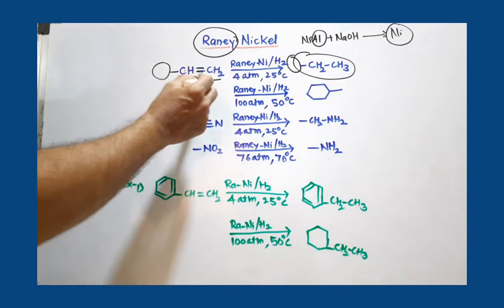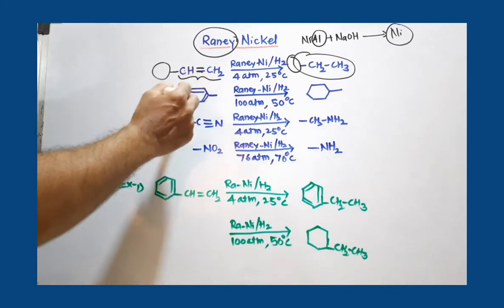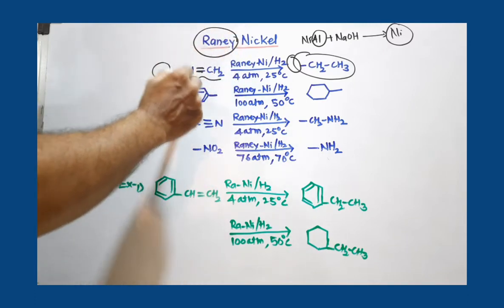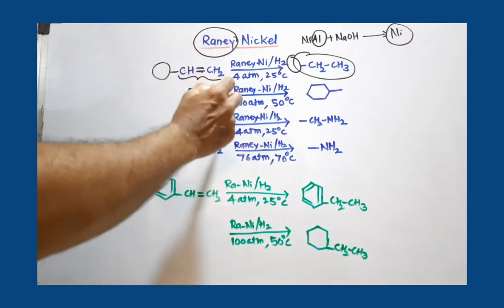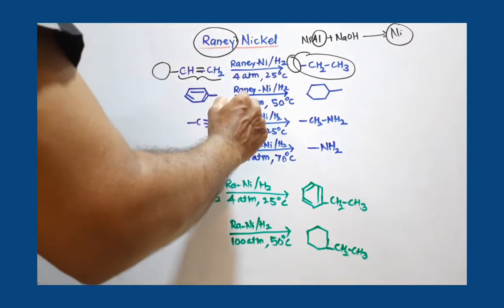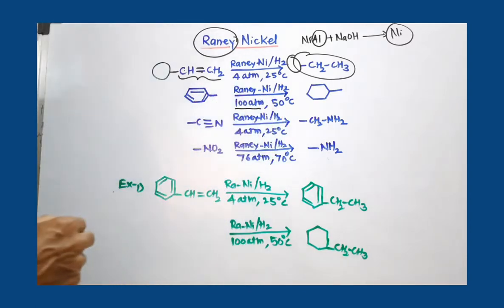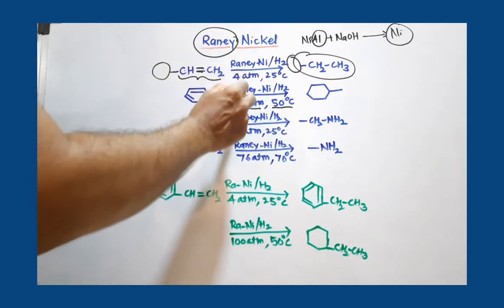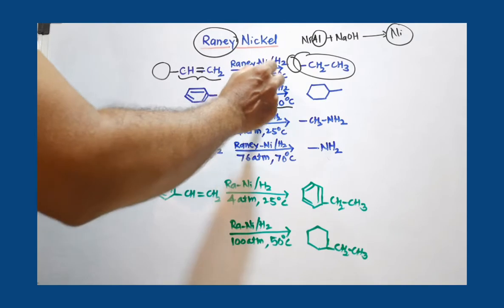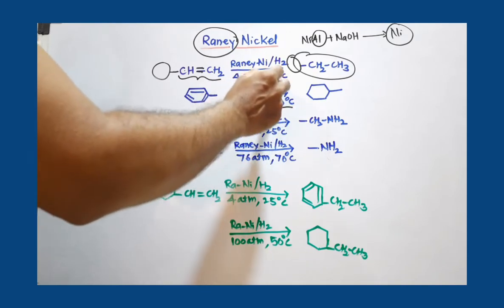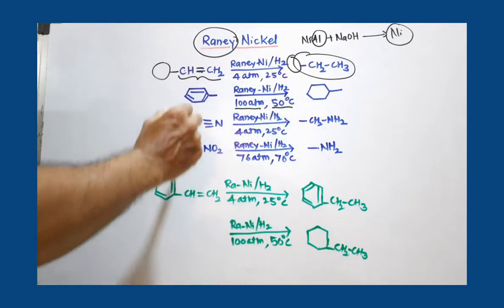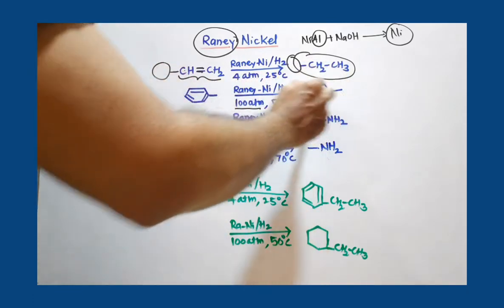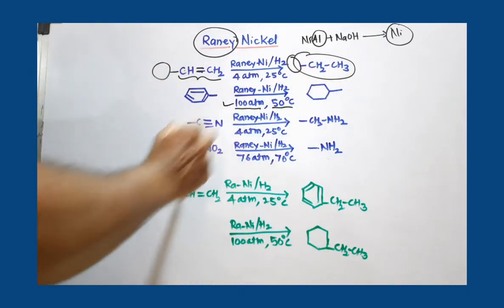In benzene, in the aromatic ring, there are 3 double bonds. This Raney Nickel can be used to reduce benzene, but the thing is you need to perform this reaction at very high pressure and high temperature - 100 atmospheric pressure and 50 degree Celsius. So 3 double bonds are removed and it is converted to cyclohexane. You remember only reaction conditions.